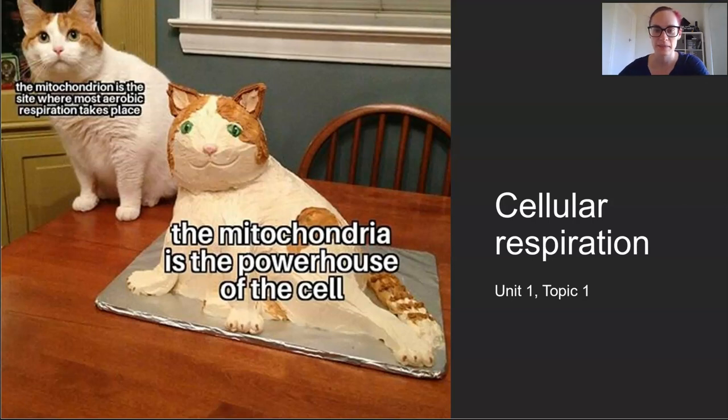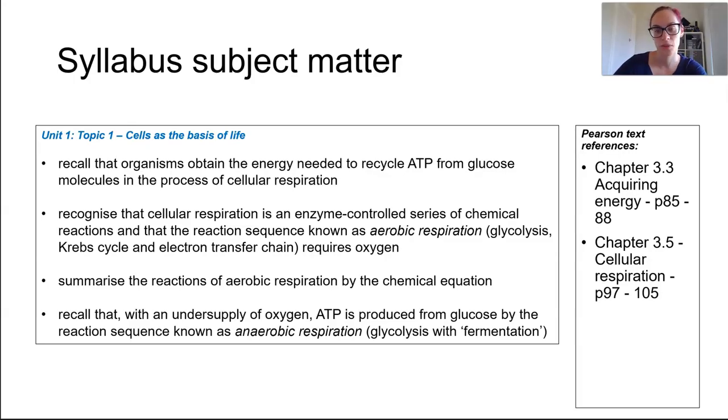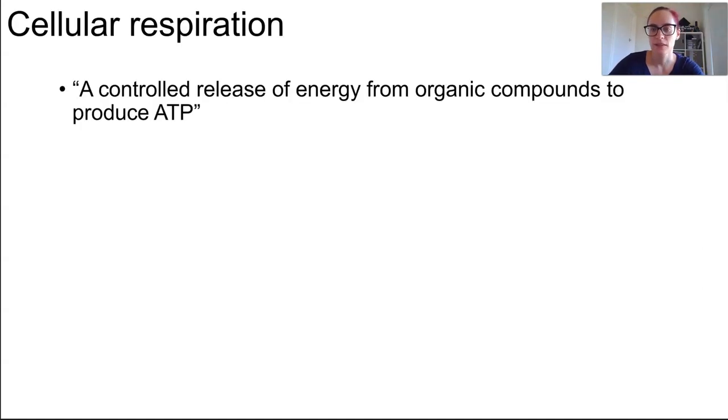In this lesson we are looking at cellular respiration. This is the last section of topic one in unit one, so please make sure you are up to date. Cellular respiration is a controlled release of energy from organic compounds to produce ATP. Recall that ATP is adenosine triphosphate, which is our cell's energy currency.